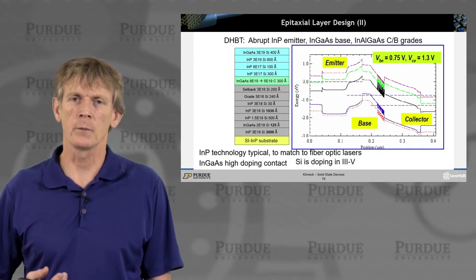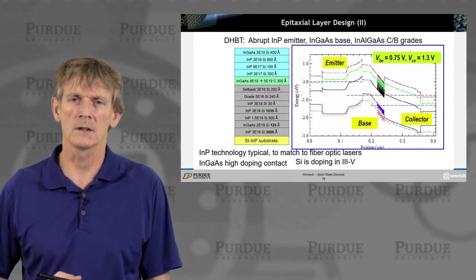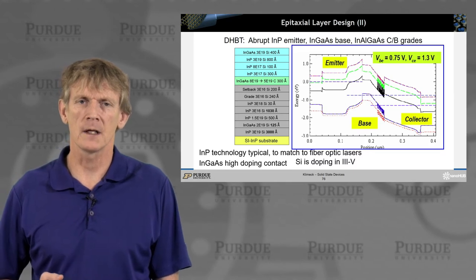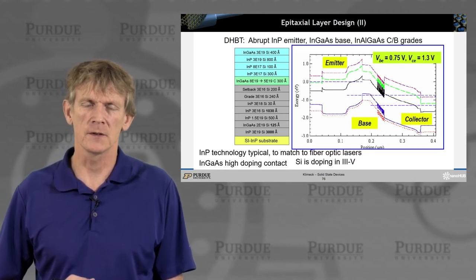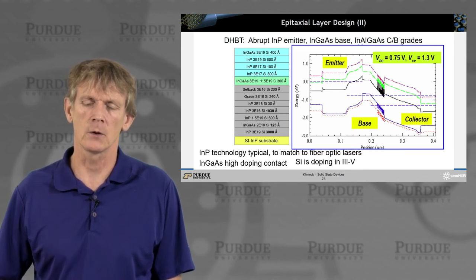And notice how silicon is a dopant in 3-5, right? We had early on in the course talk about silicon as being a dopant either P and N type dopant in 3-5 materials. Well, these are the 3-5 materials we talked about in the very beginning of the course.